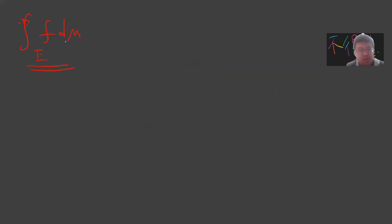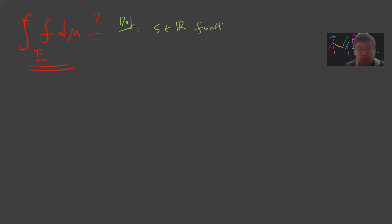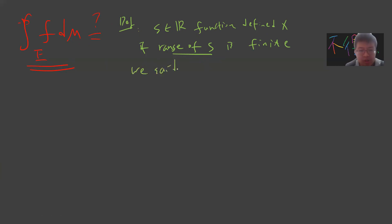Today I want to define this notation — a common notation. You are given a measurable function, you pick a measure mu, and you pick a measurable set. What is this defined to be? Let's say s is a function from X — where X is a topological space with a sigma ring — to the reals. If the range of s is finite, meaning there are only finitely many possible values, we say that s is a simple function.